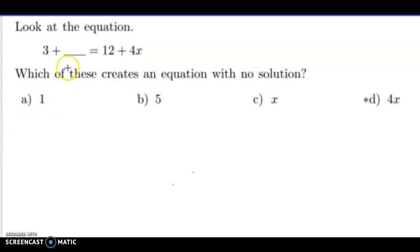All right, so if I substitute 4x in, and if I subtract 4x from both sides, these 4x's cancel out on this side, these 4x's cancel out on this side, I'm left with 3 equals 12, and never in my lifetime has 3 ever equaled 12, so that would be no solution.